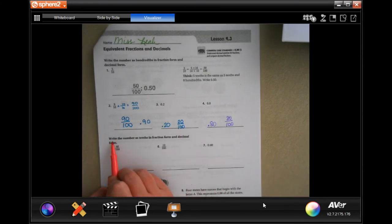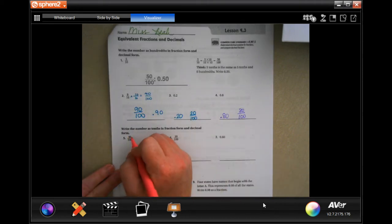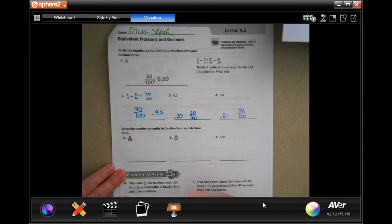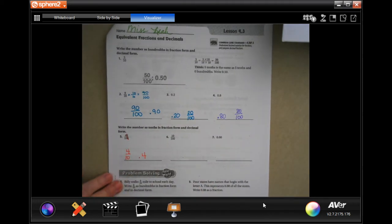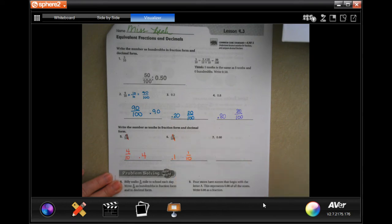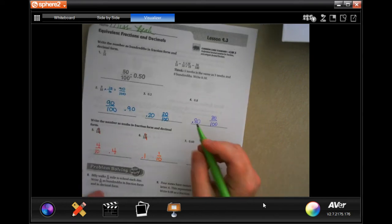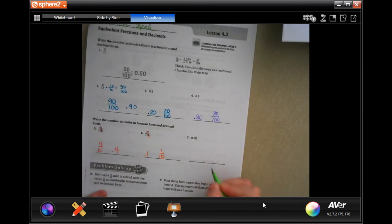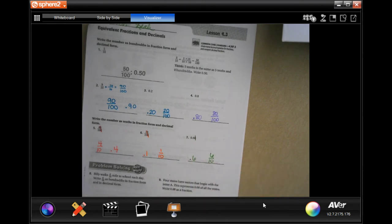Let's do this one. Write the number as tenths in fraction form and decimal. All we're doing now is taking those last zeros off. So 4 over 10 or 0.4. We're going to take that last zero off, so now it's 0.1 or 1 over 10. Take that last zero off, so it's 0.6 or 6 over 10.